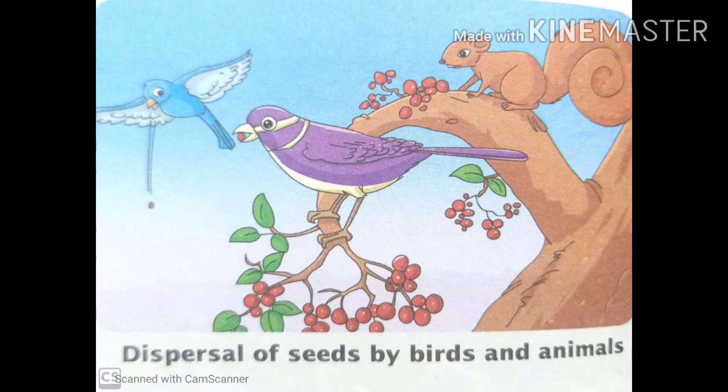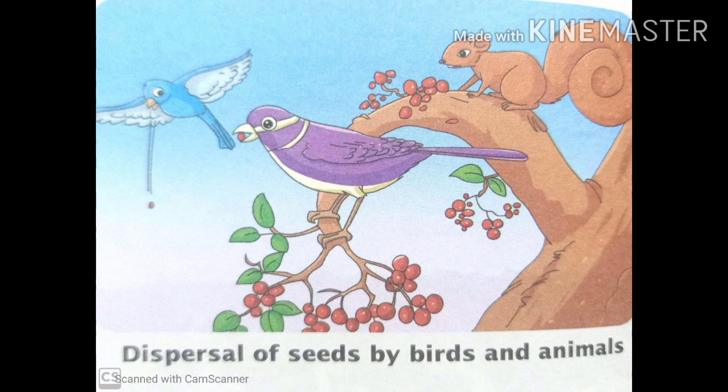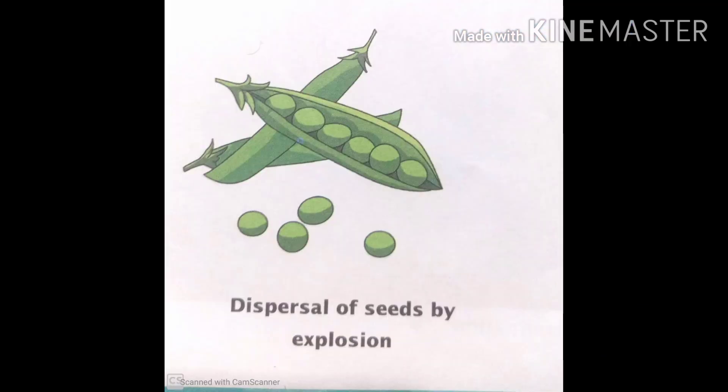Third is by birds and animals. These seeds have external structures such as pines or hooks such that they can attach themselves to animals and get dispersed to other places. Sometimes animals eat fruits and seeds pass through the animal digestive system and are excreted to far off places. Example like blackberry, cherry, apple.